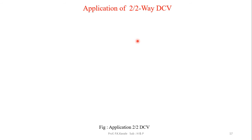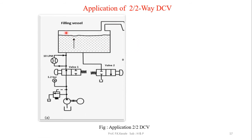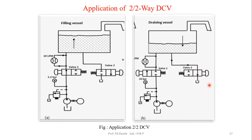Application of a 2/2 DCV: consider a tank that needs to be filled. A pump and pressure relief valve are connected. The first 2/2 valve is normally open, so flow is diverted toward the tank, filling it. A second valve is used to drain the vessel — it is normally closed, and when pushed, liquid moves out for draining.